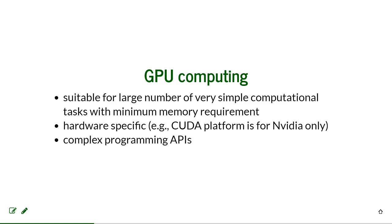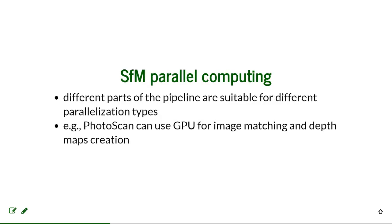The different parts of the structure from motion pipeline are completely different algorithms, and each part can be parallelized in a different way. In Agisoft PhotoScan settings, for example, you can choose whether to use a GPU or just CPUs. GPU use can be switched on for specific parts of the pipeline — specifically for image matching and depth map creation — where GPUs are applicable because those tasks fit the very specific requirements GPUs need.